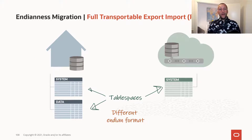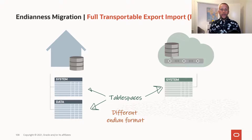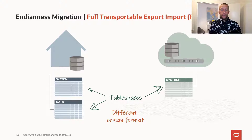In this example, we have a system tablespace and a data tablespace in our source database. Normally you would have a lot more tablespaces — SYSAUX, Undo, and other user tablespaces as well. But for simplicity, in this example I only have the system tablespace and a data tablespace where all the user data is stored. In the target system, I only have a system tablespace because no user data has been migrated there yet. The colors are different to represent that they are of a different endian format.